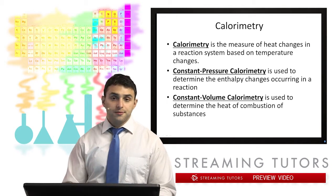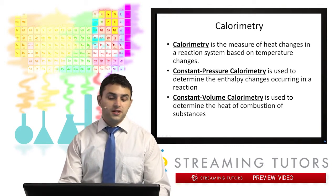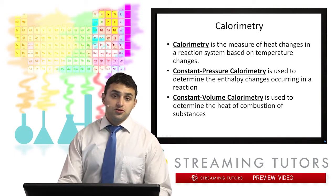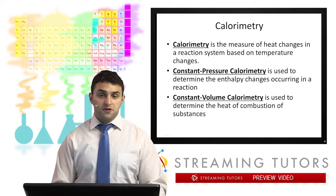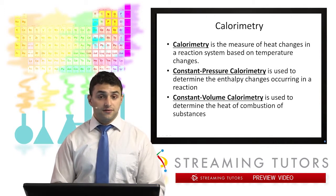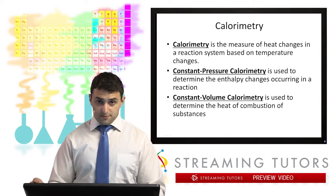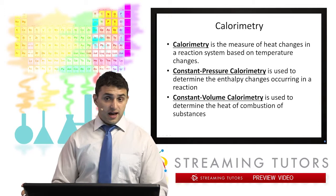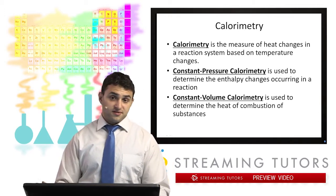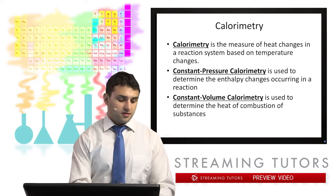Calorimetry is simply the measurement of heat changes in a reaction system based on temperature changes. There are two kinds: constant pressure calorimetry, which we use to determine the enthalpy change of reactions, and constant volume calorimetry, which is used to determine the heat of combustion of various substances.